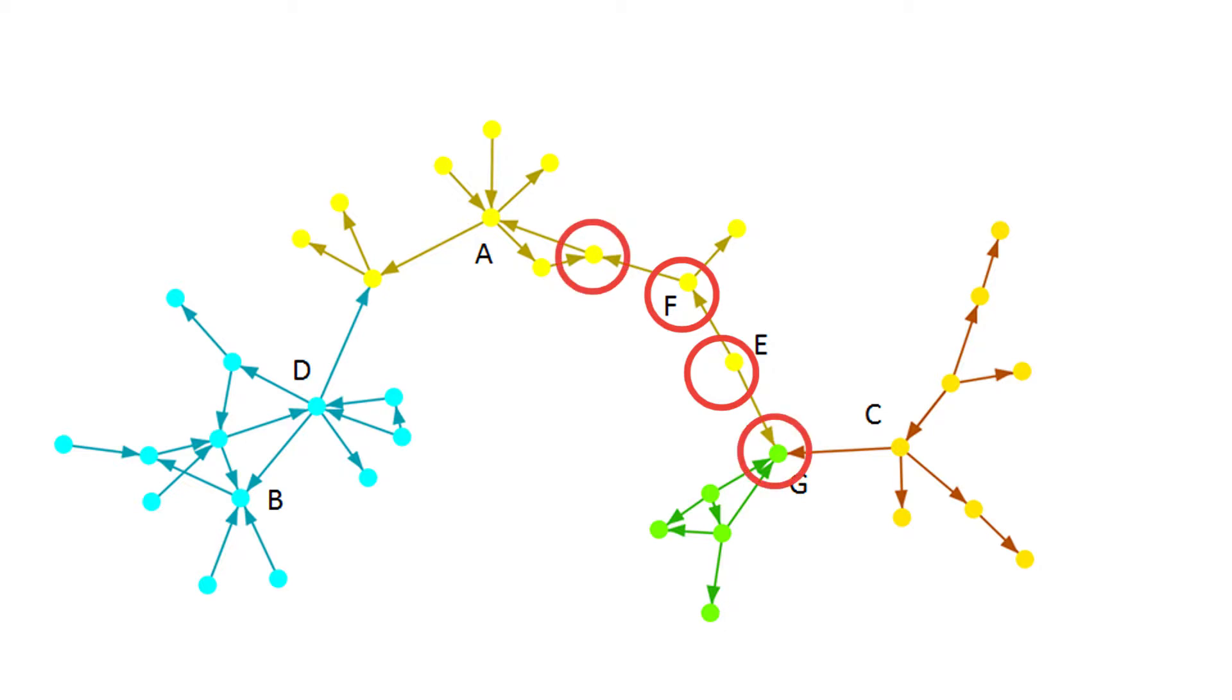But while engagement is taking place in the cliques and some exploration is taking place between cliques, if actors E and F were to leave, ideas flow would collapse. This is a decentralized system.